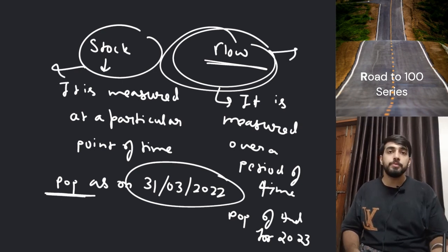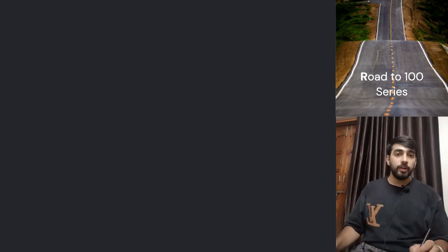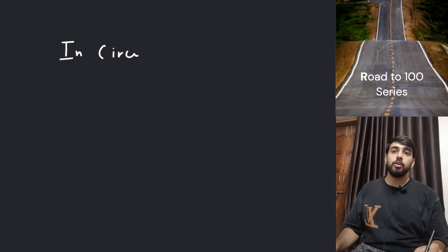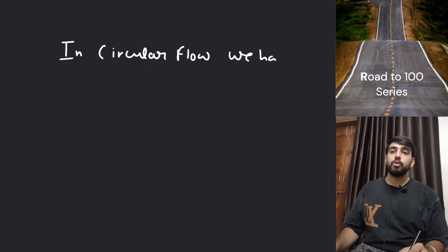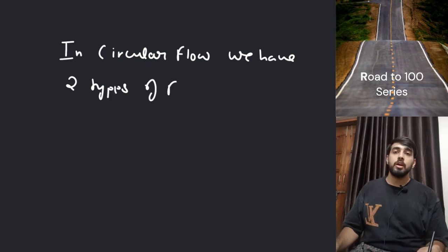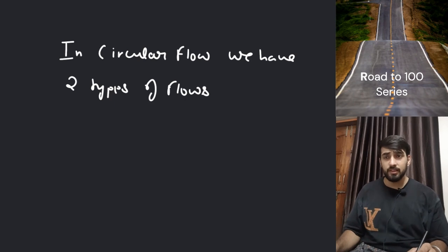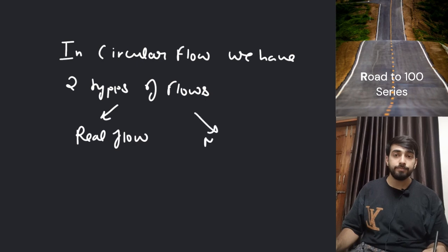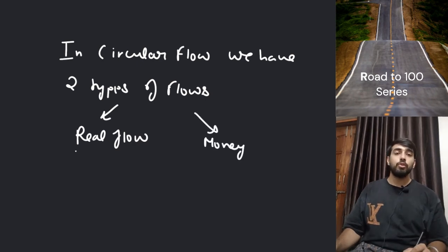We will talk about two types of flow. Basically in circular flow we have two types of flows. These two types are: one is called real flow and the other is called money flow. If I talk about real flow, real flow is all about physical flow.